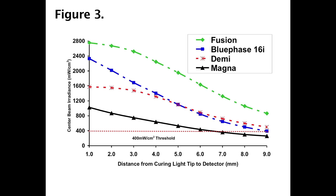The fusion curing light delivered the greatest irradiance at all distances, and was the only light to still deliver more than 1,000 mW per cm² at the 8 mm distance.